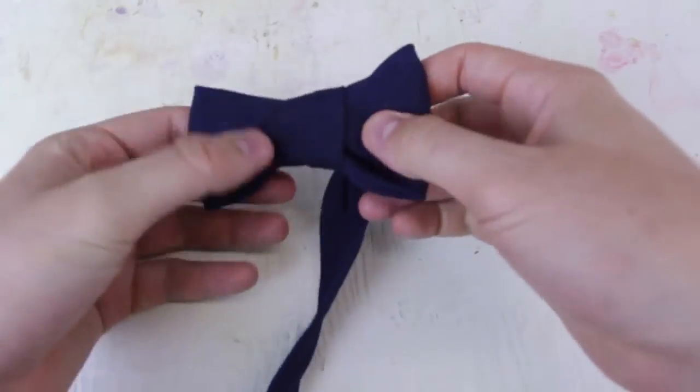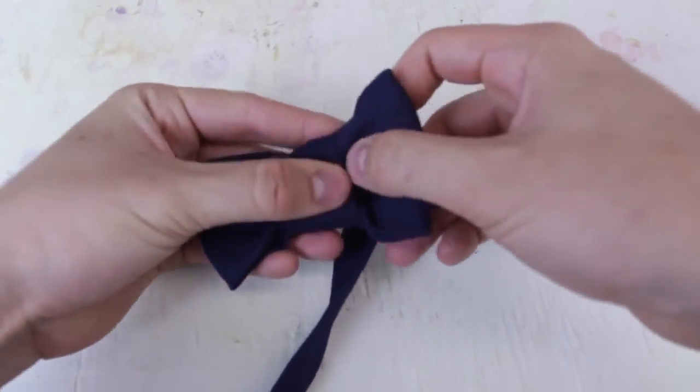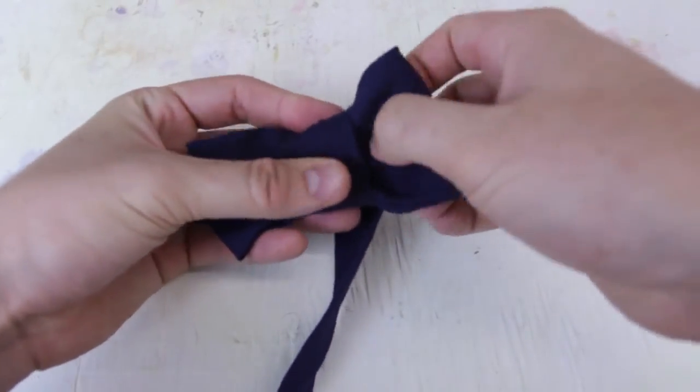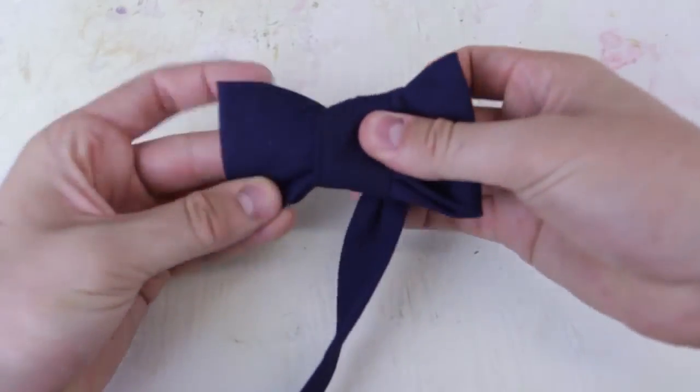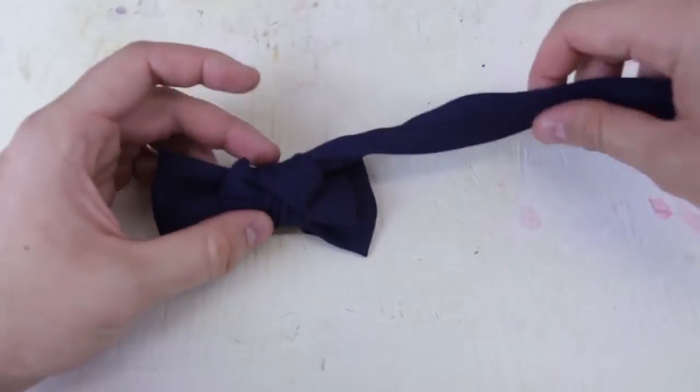And then you see how these two lines right here, you can actually move them to the middle as well. Just fold it nicely, unfold it there, and now we got a perfect bow tie. Now to make a loop for your neck...